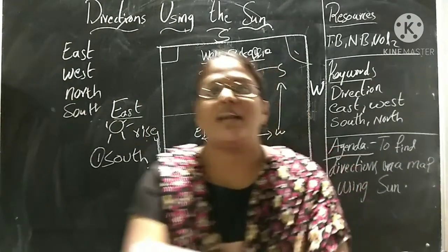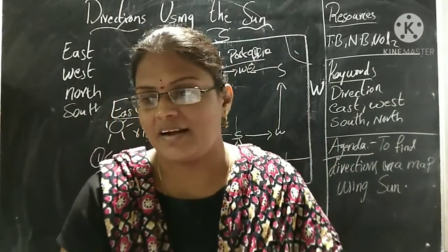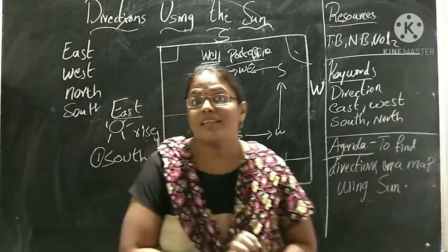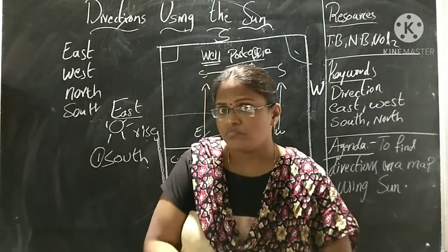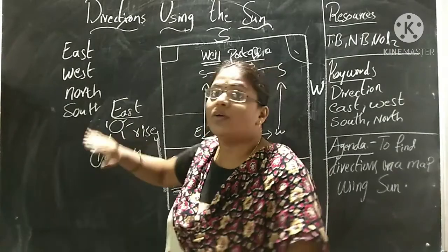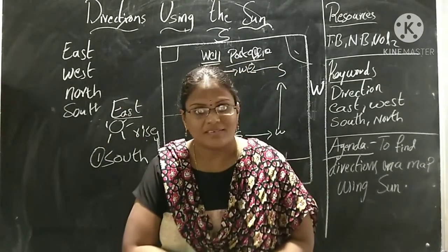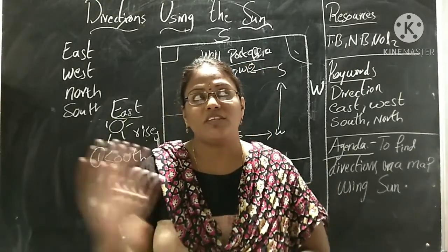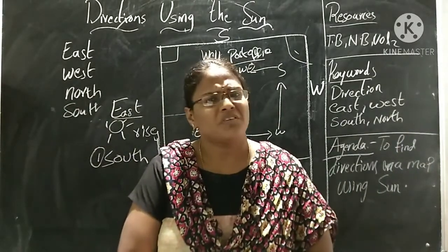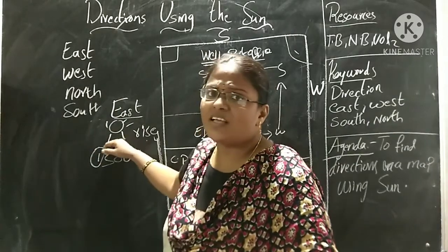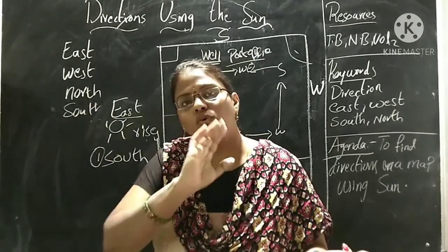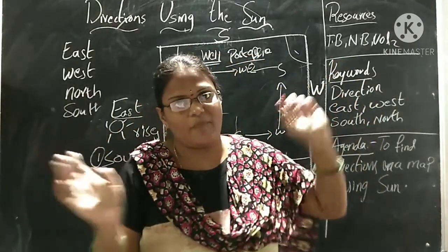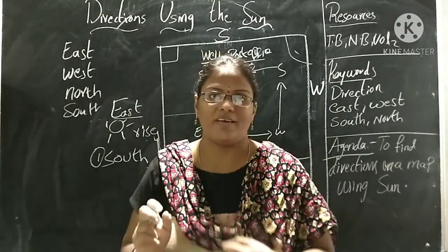The last question: how would you find directions in the night time? Can you find directions at night? In the daytime we use the sun. At night we can see the moon — by seeing the moon. The moon also rises in the East, just like the sun, and the moon always sets in the West. Same as the sun.